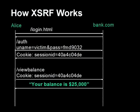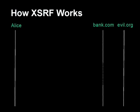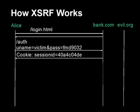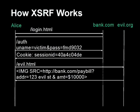Now let's look at what happens when Alice gets lured to evil.org while logged into bank.com. As before, she authenticates with bank.com and gets a cookie. While logged into bank.com in one window, she opens another window, clicks on some link, and is served a page by evil.org. What evil.org can do is serve her a web page with some HTML on it — specifically an image source tag with a URL that says 'go make a request to bank.com.'